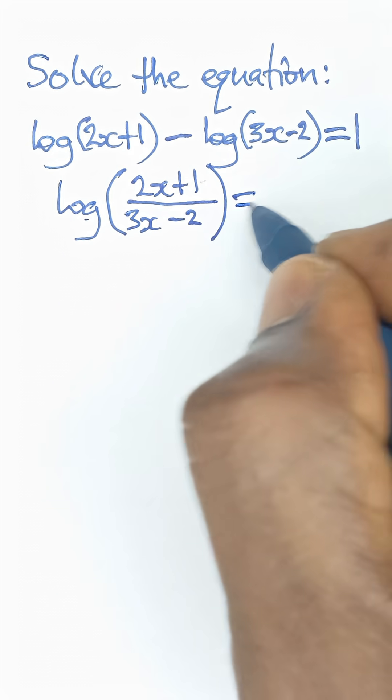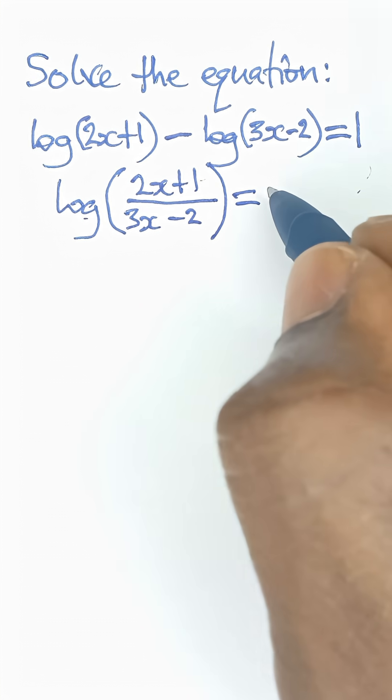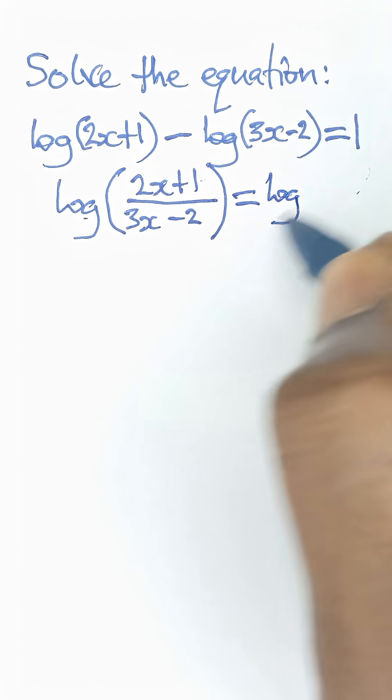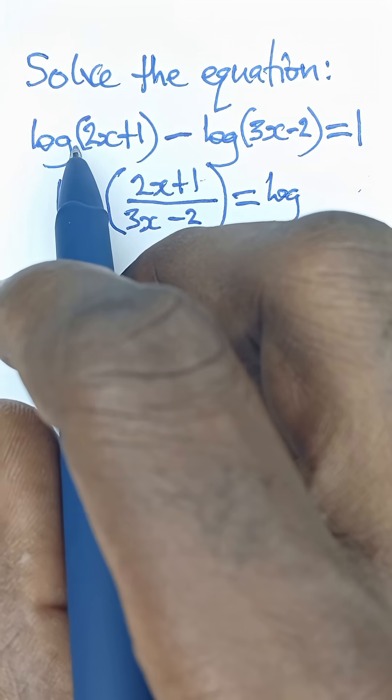And that will be equal to, we cannot use this one like this because it is not in logarithm form. So we convert this one to logarithm form. It becomes log, the base, don't forget, once you see log like this, the base is actually 10.